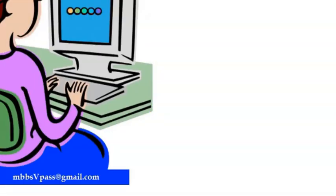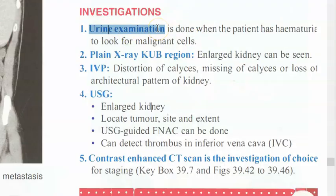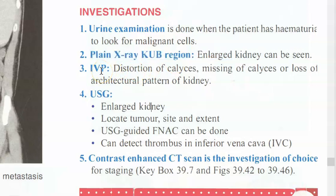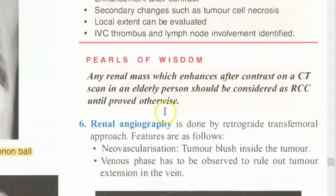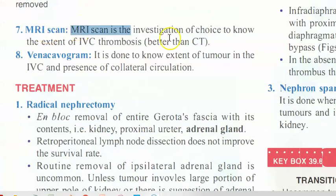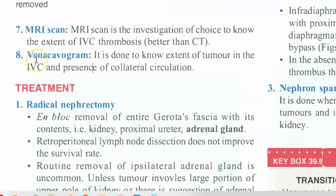Investigations include urine examination for hematuria, X-ray of KUB (kidney, ureter, bladder), intravenous pyelography (IVP), ultrasound, CT scan, and angiography. MRI is preferred for knowing the extent of IVC thrombosis - better than CT. Vena cavogram can show the extent of tumor in the IVC and the presence of collateral circulation.